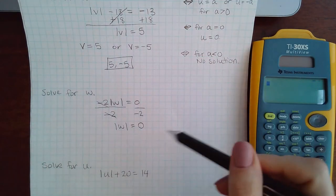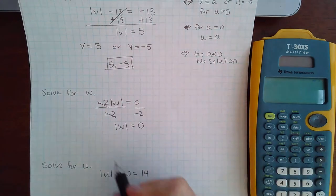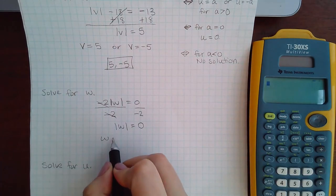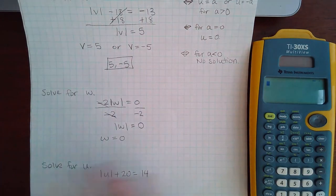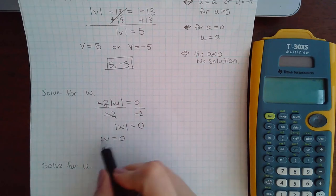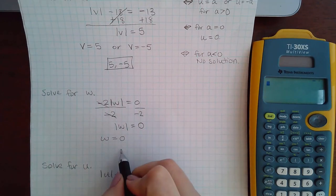And so now this is the middle case. I'm not going to have a plus zero and a minus zero because that doesn't make sense, so you just take what's inside the bars equal to zero. And since w is already isolated, there's just one answer and that answer is zero.